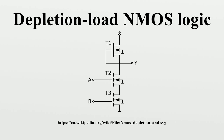Early MOS logic had one transistor type — enhancement mode — so that it can act as a logic switch. Since suitable resistors were hard to make, the logic gates used saturated loads, making one type of transistor act as a load resistor by tying its gate to the power supply. Since the current in a device connected that way goes as the square of the voltage across the load, it provides poor pull-up speed relative to its power consumption. A depletion mode device with gate tied to the opposite supply rail is a much better load than an enhancement mode device, acting somewhere between a resistor and a current source.